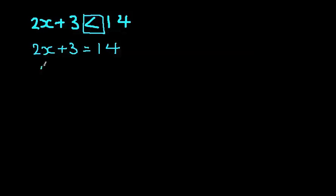So make 2x the subject, so 2x. This plus 3 will float onto this side and the plus will become a minus equals 14 minus 3. So we have 2x equals 11 and then x equals 11 divided by 2.